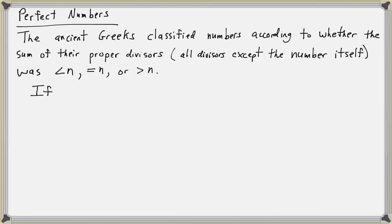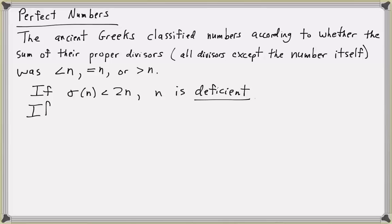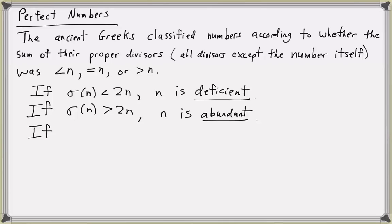Let's use our sigma function. If the sum of the proper divisors was less than n, then sigma of n would be less than 2n, and they called n deficient. If sigma of n was greater than 2n — in other words, the sum of its proper divisors was greater than n — then n was called abundant. And of particular interest is when the sum of the proper divisors equals n; they called those perfect numbers. So if sigma of n equals 2n, then n is called perfect.